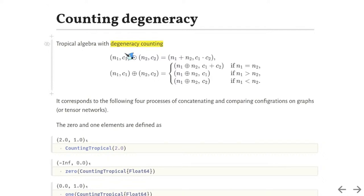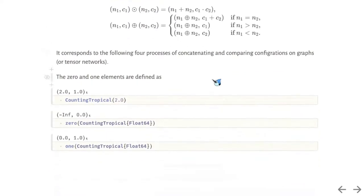To count the degeneracy, we add a new field that's called the counting field to the tropical number. The counting field is initialized to 1. When doing multiplication, the counting field does the regular multiplication. It means when concatenating multiple subgraphs, the new degeneracy is a multiplication of subgraph degeneracies.